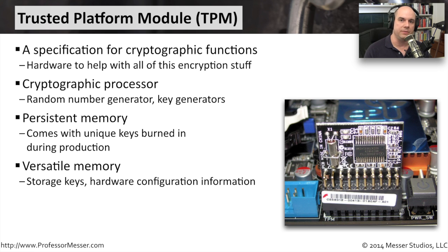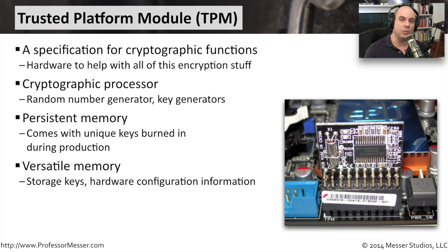Another function of a TPM is versatile memory — memory where we can store information, such as keys. A piece of software can scan the hard drive, the motherboard, and the memory inside your computer, then cryptographically store that information inside the TPM. When your software starts up again, it can perform the same checks, compare them to what it saw last time, and see if somebody changed out the hard drive or altered the amount of memory. You know a change occurred because you cryptographically signed it and stored it securely, and you know if anything happened to that computer.